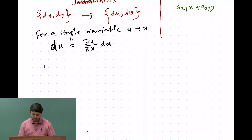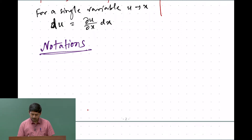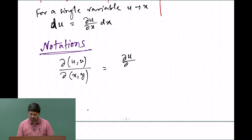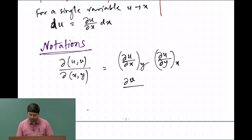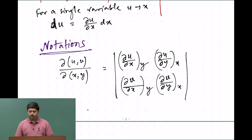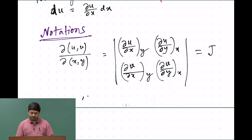Before we proceed, we will discuss some notations. The Jacobian matrix can be written in a much simpler shorthand form. This notation means: [del U/del X at constant Y, del U/del Y at constant X; del V/del X at constant Y, del V/del Y at constant X]. This is the Jacobian matrix in compact notation — we are converting the pair (X, Y) to the pair (U, V).